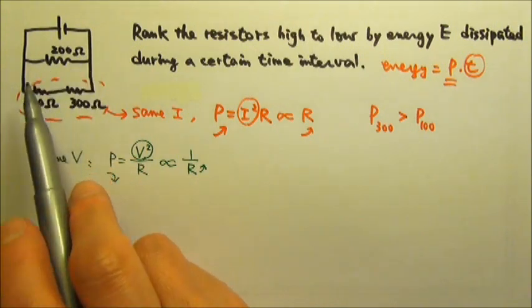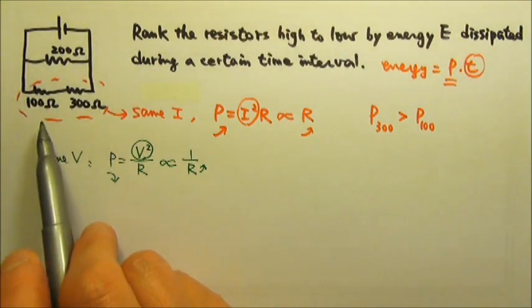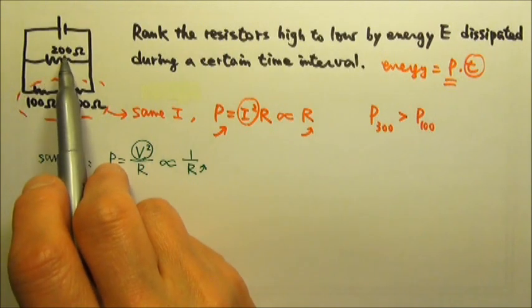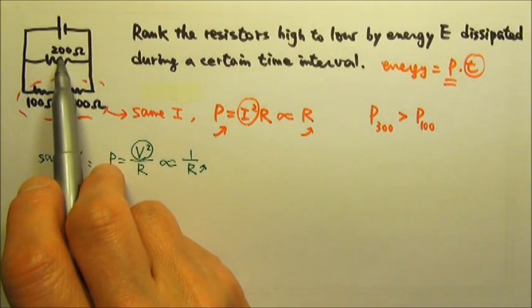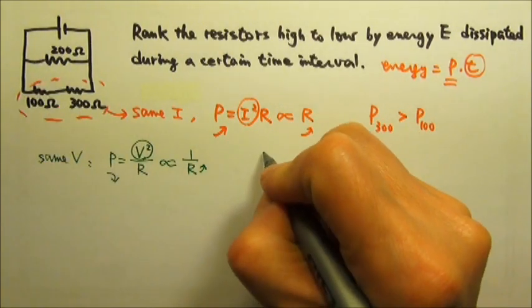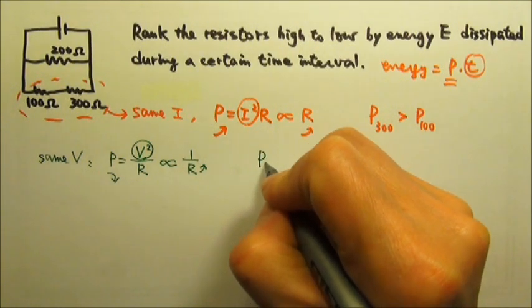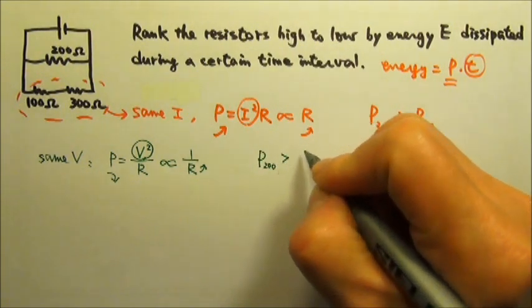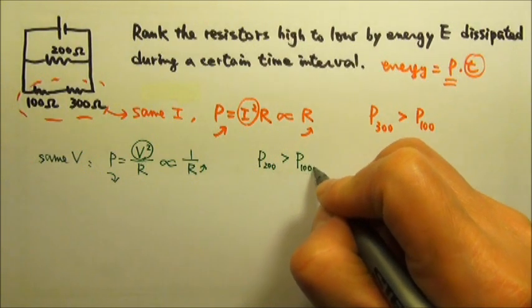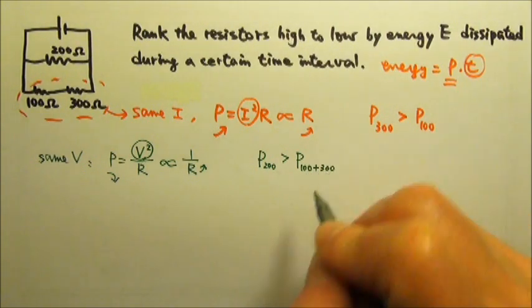The one with the larger resistance would consume less power. The 200 ohms compared to this combination, which is 400 ohms, has less resistance, which means more power, so the power consumed by the 200 ohms is more than the power consumed by the 100 and 300 combined.